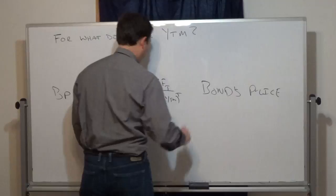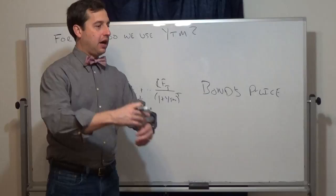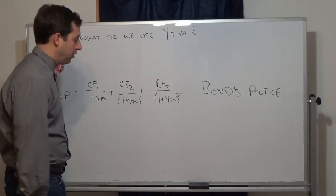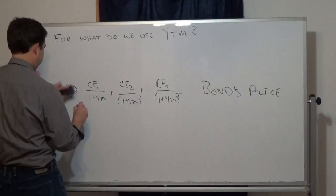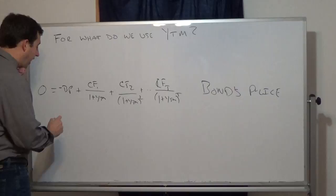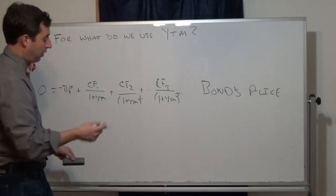You set up this equation and solve for the yield to maturity using something like the Newton-Raphson algorithm — solving for the root of a polynomial. In Excel, you set zero equal to the negative bond price plus those cash flow terms and use the IRR function, which is also why we say yield to maturity is the internal rate of return of the bond.